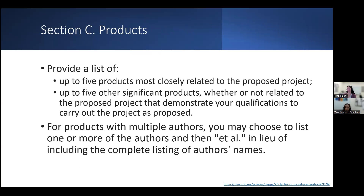For the products in Section C, you can list up to 10, with five being closely related to the proposed project and up to five other significant products that demonstrate your qualifications to carry out the project as proposed. If you are short on space and have products with multiple authors, you can list the first couple of authors and then use et al. in lieu of including the rest of the author names.